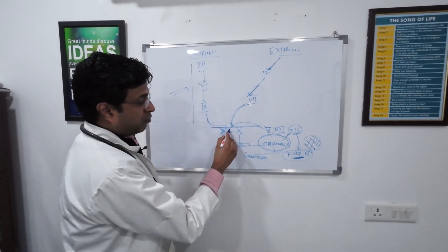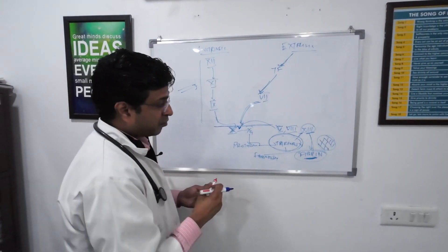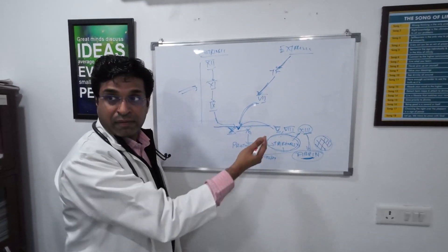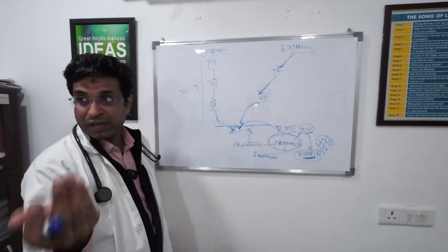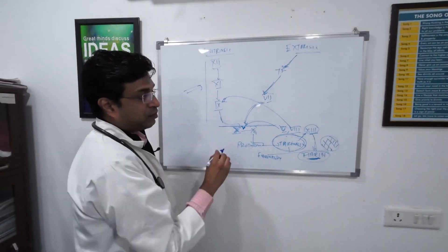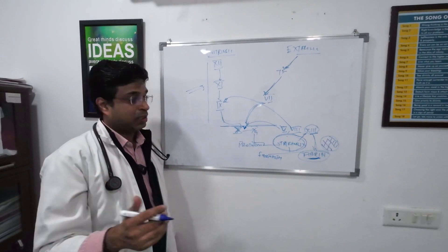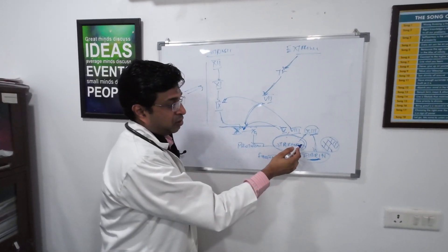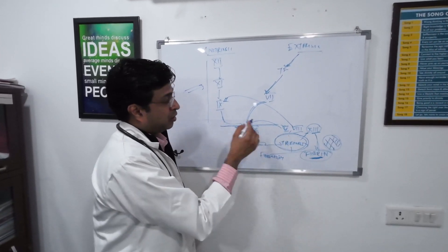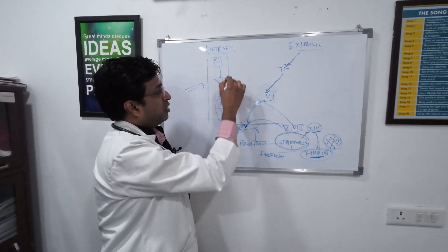Thrombin also activates factor 5 and factor 8. Factor 5 acts as a cofactor for factor 10 — you can remember this as 10 and 5 being half and double. Factor 8 is important for factor 9, so 9 and 8 work side by side. Because thrombin activates factors 8 and 5, the intrinsic pathway gets boosted.